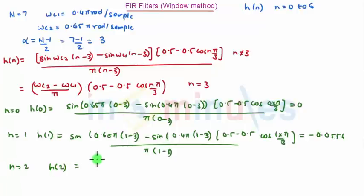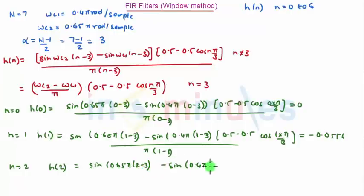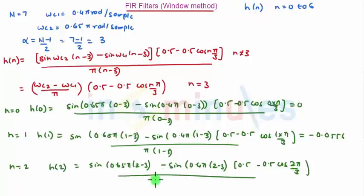When n is equal to 2, h(2) is given as sin(0.65π·(2−3)) minus sin(0.4π·(2−3)), multiplied by 0.5 minus 0.5·cos(2π/3), the whole divided by π·(2−3). The final value comes out to be minus 0.0143.